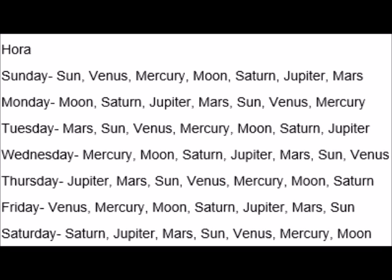So rule number one: the sequence never changes for any planet, any day — it must be Sun, Venus, Mercury, Moon, Saturn, Jupiter, Mars. Rule number two: the first Hora starts from the planet which rules that particular day. The first Hora for Sunday will be Sun, the first Hora of Monday will be Moon, and so on. Rule number three: every planet gets one hour, and after all seven planets complete their hours, it follows the same sequence again.